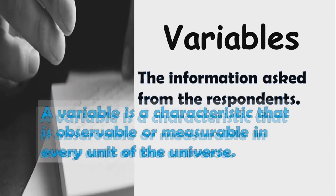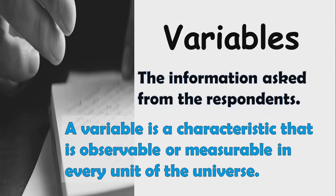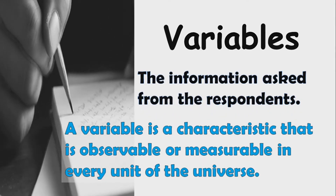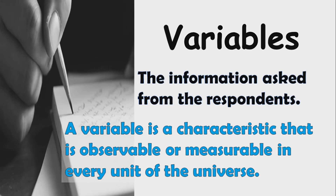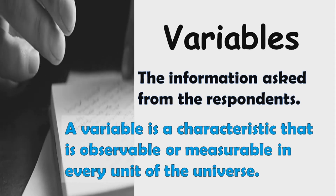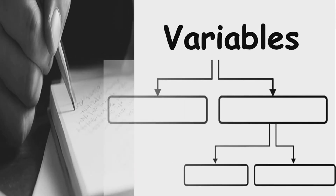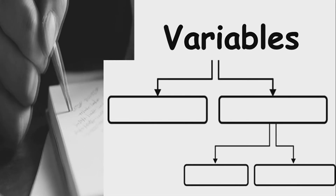Next: variables. The information asked from the respondents are what you call the variables. A variable is a characteristic that is observable or measurable in every unit of the universe. Take note — the characteristic of a variable is observable or measurable.